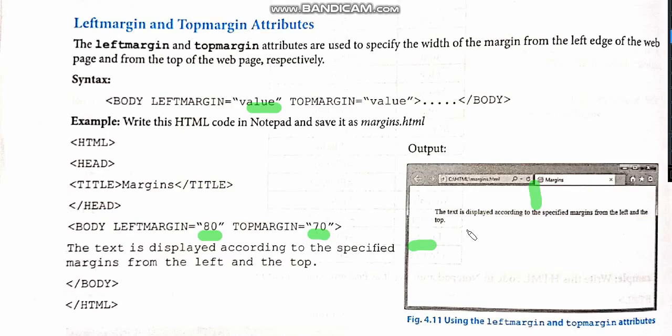In this video, we have learned about the body tag and the different attributes used in the body tag: background, bgcolor, left margin, top margin, and text. Please underline the things where I have also underlined. In the next video, we will do the practical for this particular body tag. Please study.